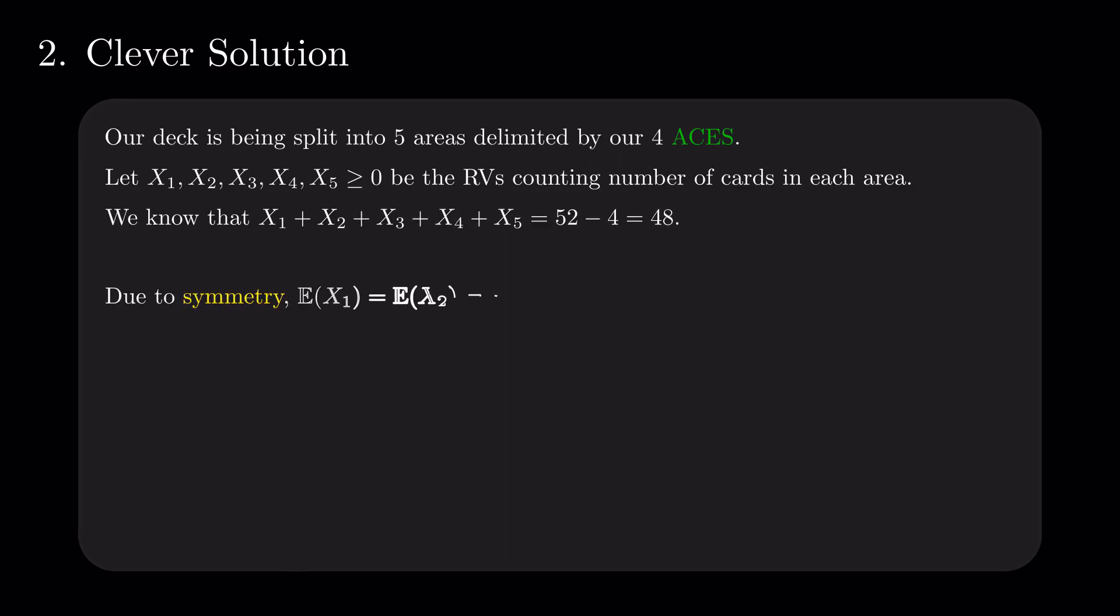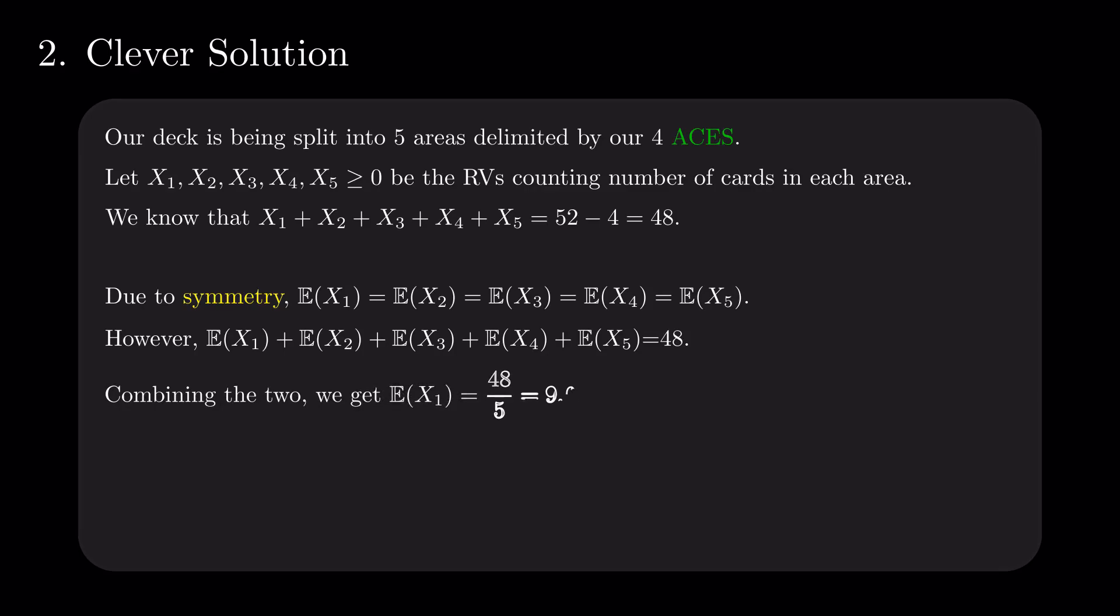Due to symmetry, their expectations are equal. While knowing that the sum of expectations is the expectation of the sum, we get that the expected length of the first group is 48 divided by 5, which is also 9.6.